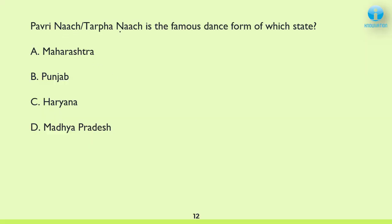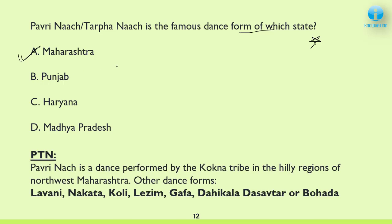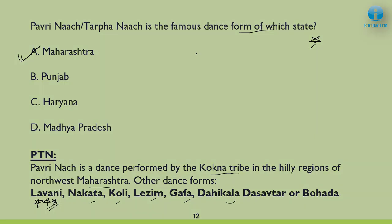Next: Pavari Naach or Tarpa Naach is the famous dance form of which state? The correct answer is Maharashtra. Pavari Naach is the dance form of the Kokna tribe in the hilly regions of Northwest Maharashtra. Some more important dance forms of Maharashtra: Lavni — very important, asked many times — Nakata, Koli, Lism, Gafa, Dahikala, Dasavatar, and Bohada. Please note them down and keep revising.